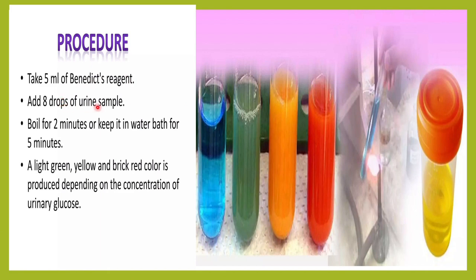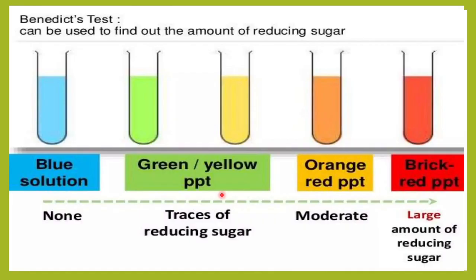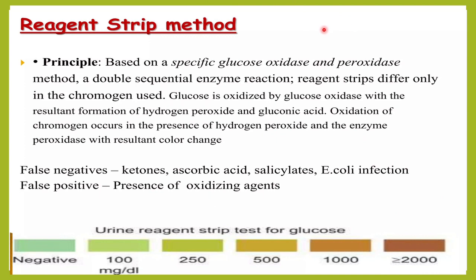In the Benedict's test, we take 5 ml of Benedict's reagent, add 8 drops of urine, and boil for 2 minutes or keep in a water bath for 5 minutes. A light green, yellow, or brick red color is produced depending on the concentration of urinary glucose. When there is no glucose the solution remains blue. A greenish or yellowish precipitate indicates traces, orange indicates moderate glucose, and brick red precipitate indicates a large amount of reducing sugar.